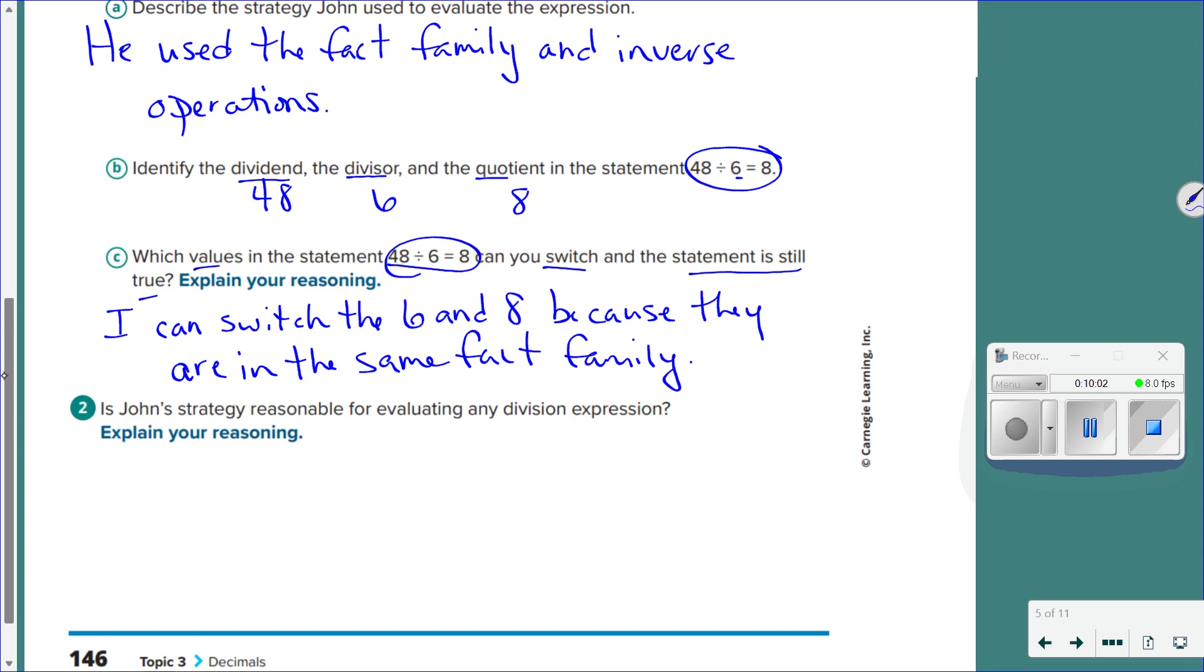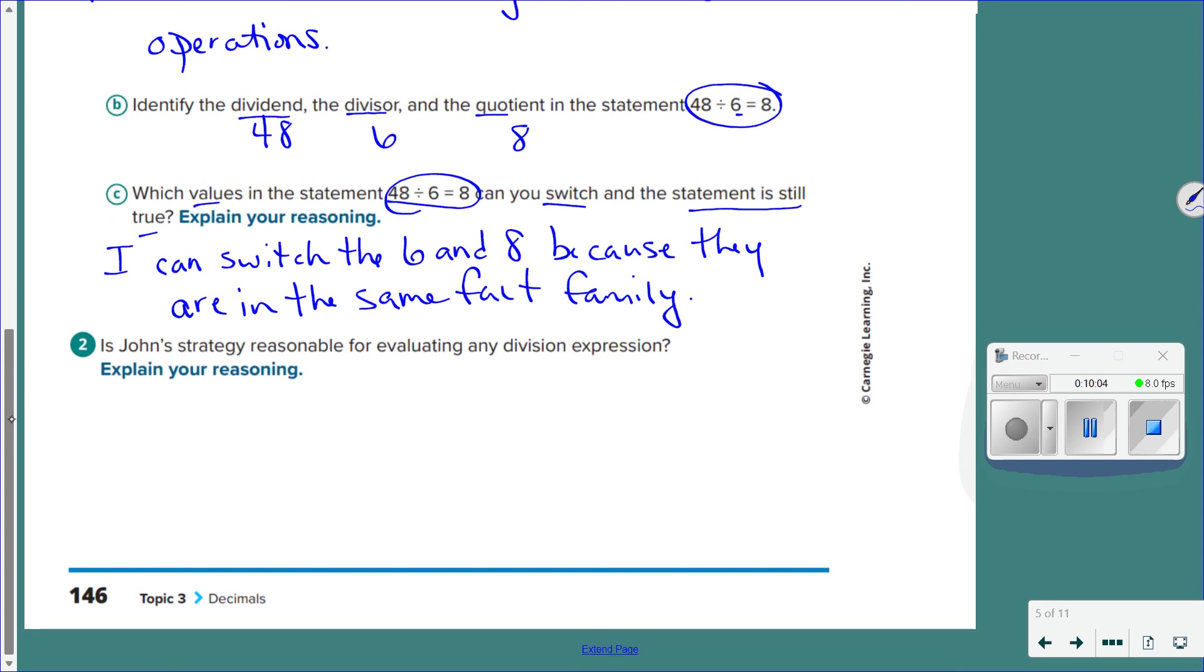Okay? So, we've done a lot of multiplication and addition so far. I realize there is no commutative property in division. Is John's strategy reasonable for evaluating any division expression? Can I use my fact family for any division expression and inverse operations? Yes. The only caveat I would throw is it's not going to work well if you have decimals or fractions. But for any whole numbers, his method works well.